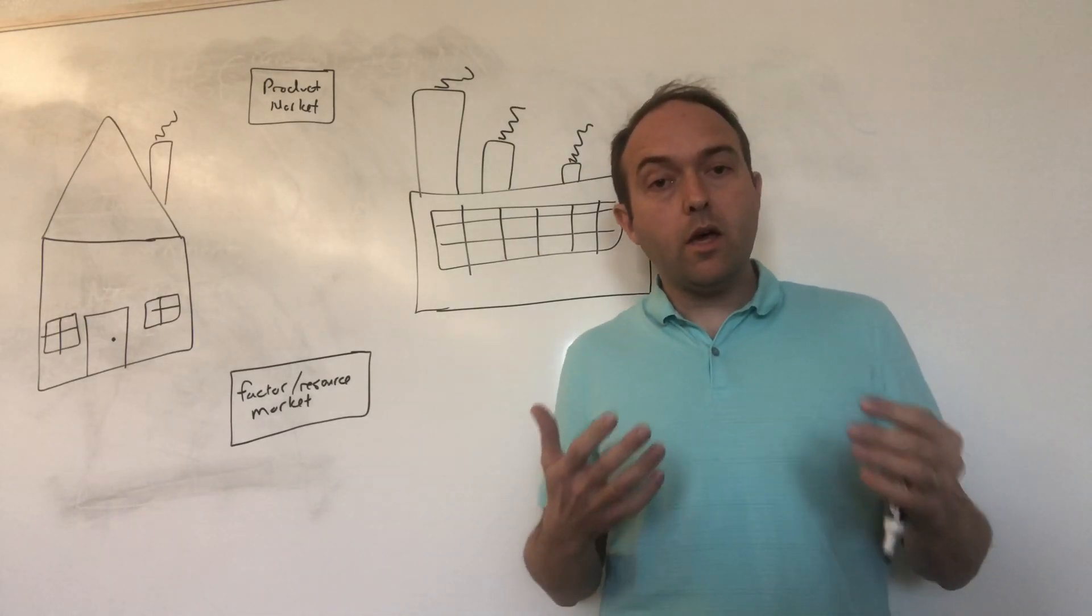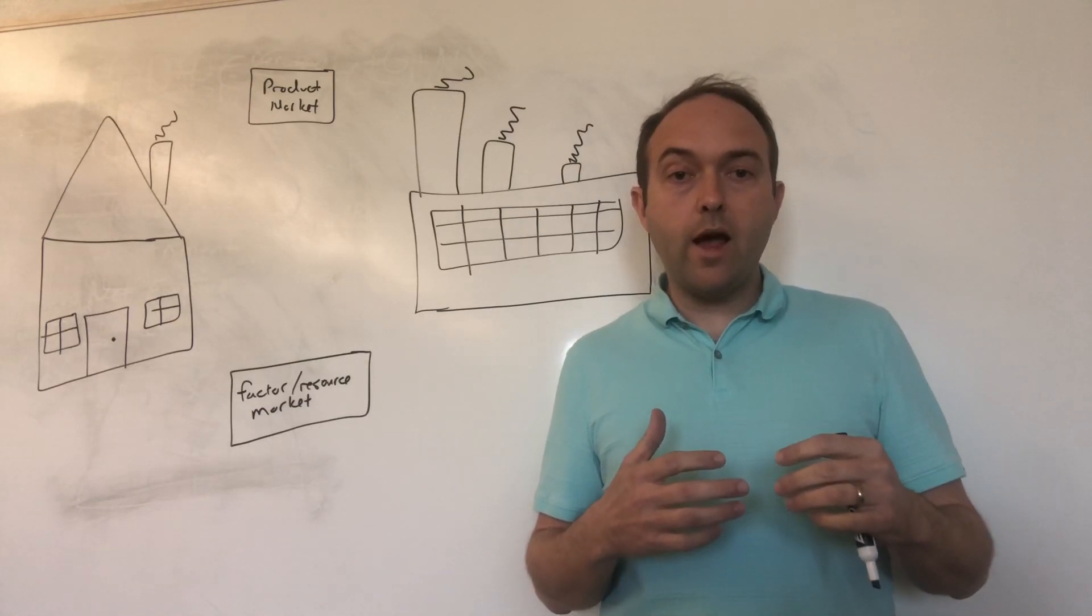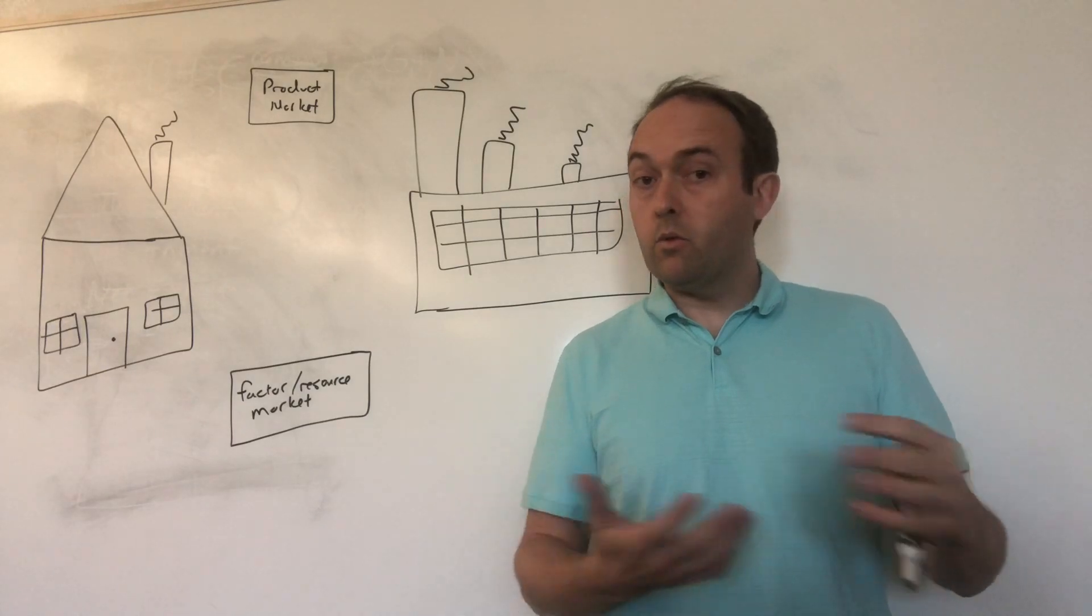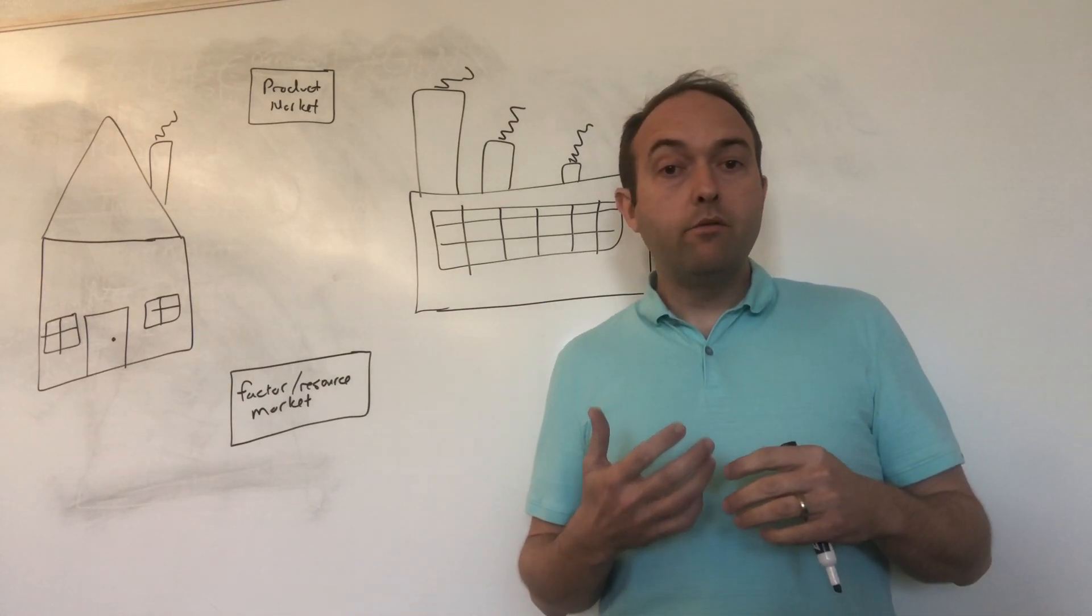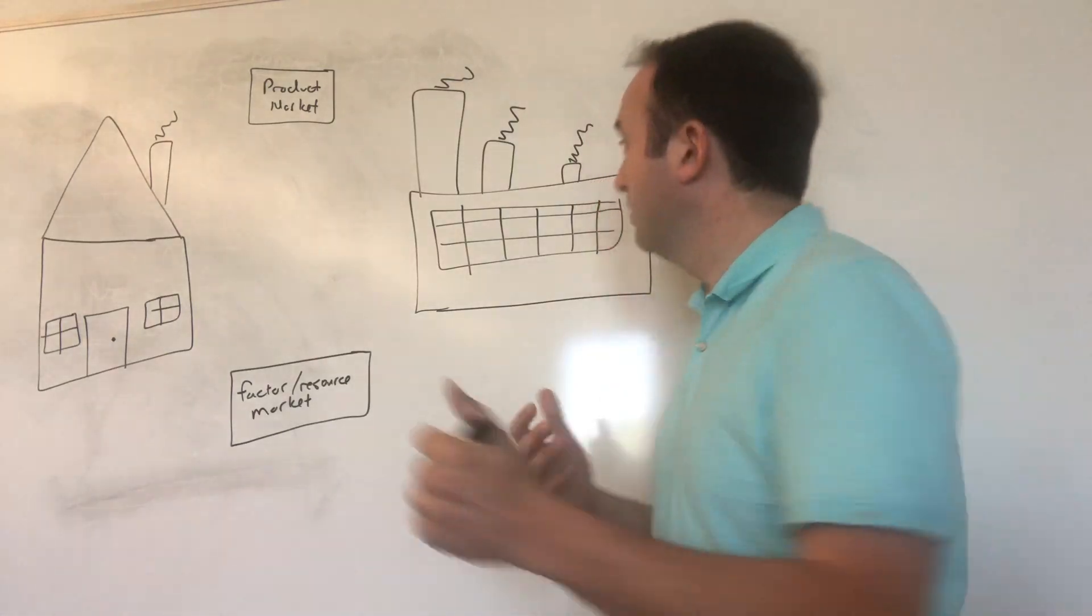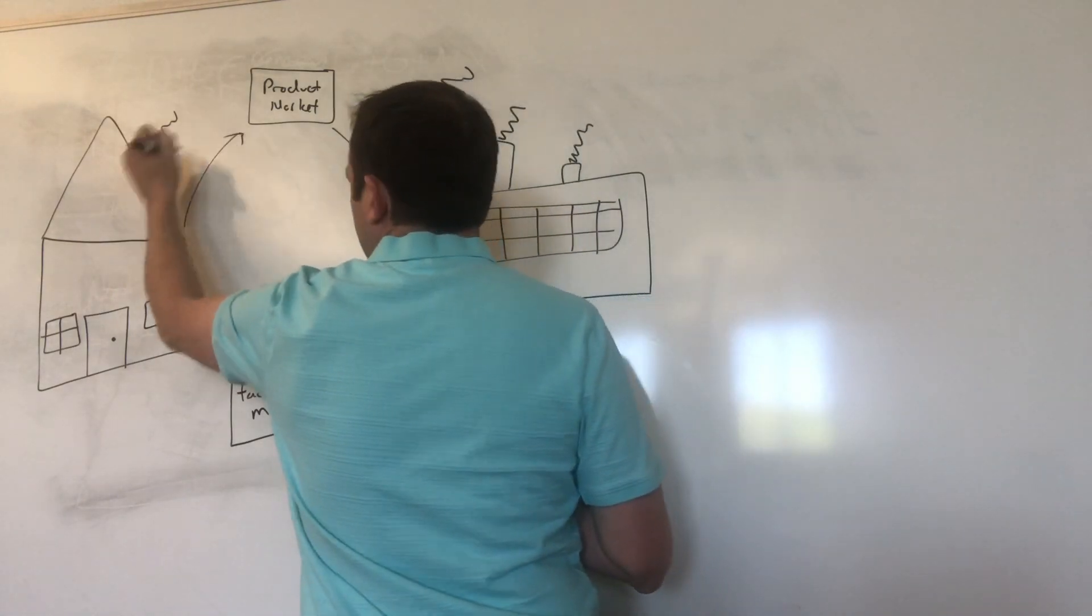The way we think about households and firms interacting in a circular flow diagram is called flows. So in a product market, like say when you go buy a TV from Best Buy, money flows out of your household and into a firm, that's here.